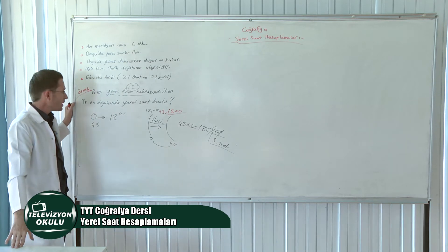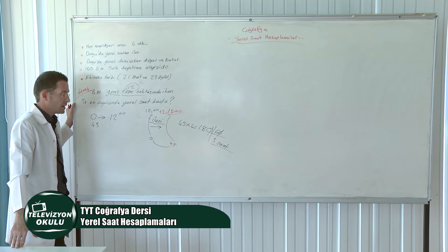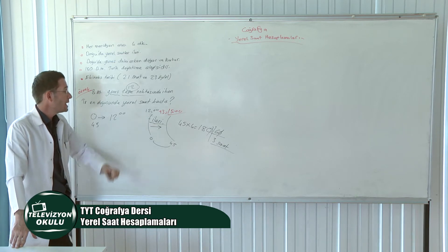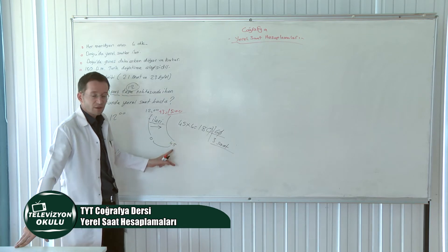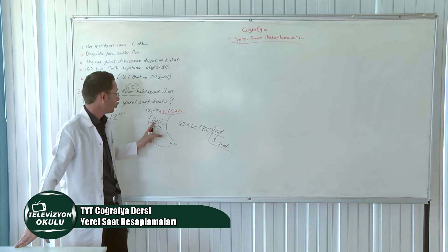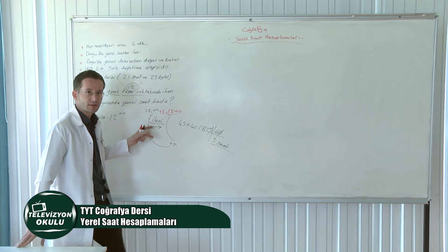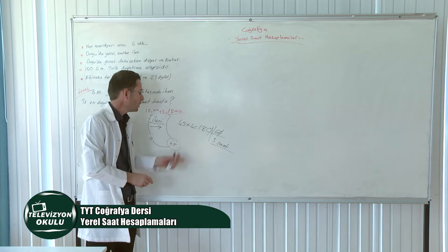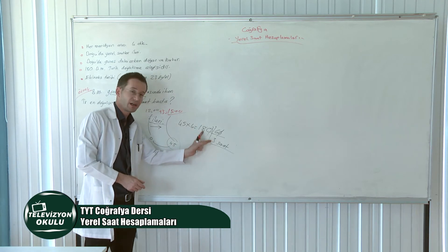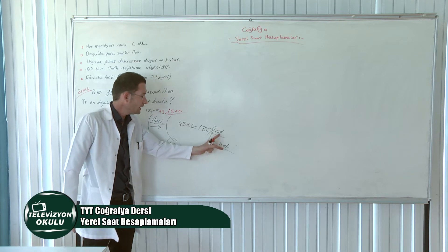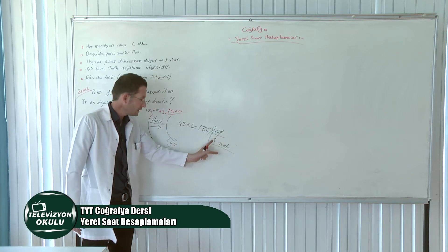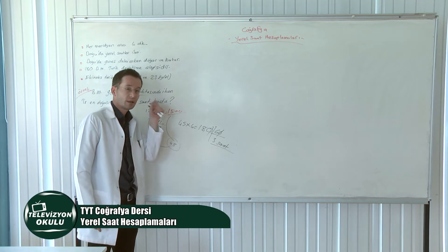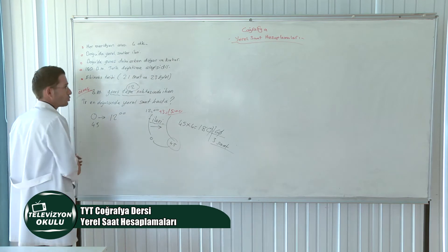Özetle: başlangıç meridyeninde saat 12, 45. Doğu meridyeninin yerel saatini istiyoruz. Doğuda olduğu için yerel saat ileri olacak. 45 çarpı 4 eşittir 180 dakika, saate çevirince 3 saat yapar. Bu 3'ü artı ekleyerek 15.00'ı buluyoruz.